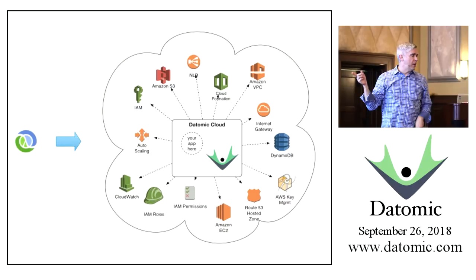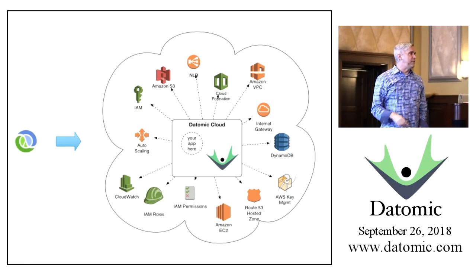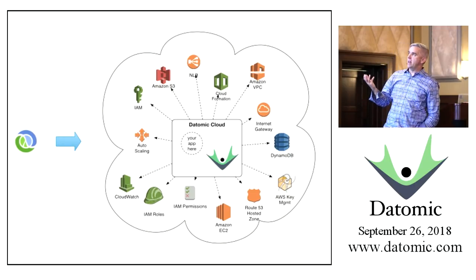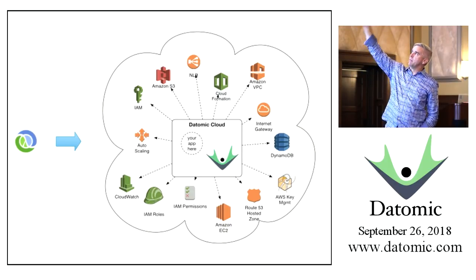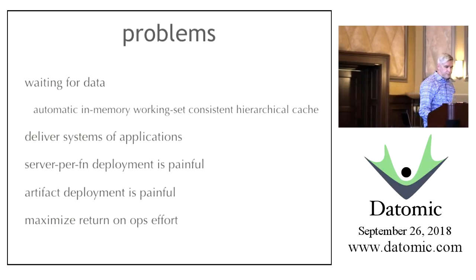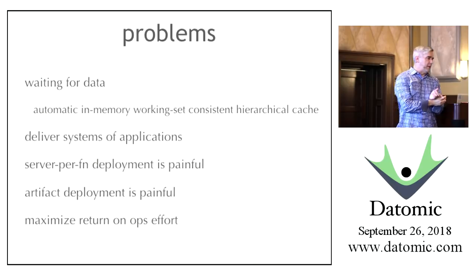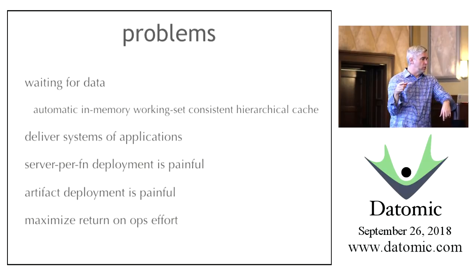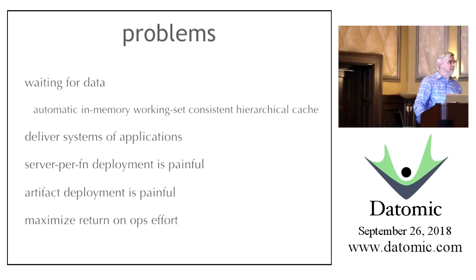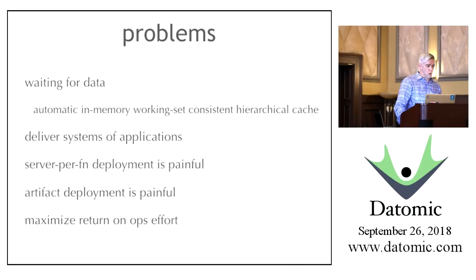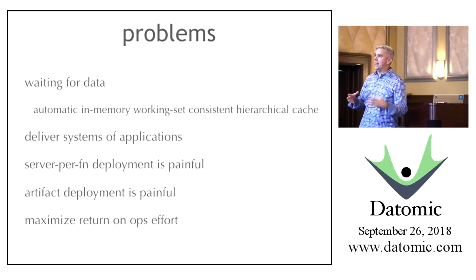They want auto-scaling, EC2, DynamoDB, load balancing, and so forth. We want to provide a solution covering these issues. One problem is we don't want to wait for data—Datomic is a peer-oriented system where your database is in memory with you. If you have to go via a client, that's no longer true—so there's an argument for putting code on a machine that has in-memory access to the data. We also want people to deliver complete systems with multiple applications from one centralized point of control. One challenge with Lambdas is: where's your higher-order notion of what you've made?